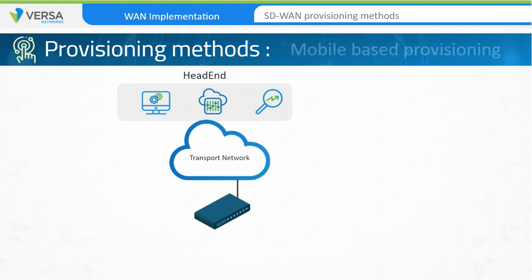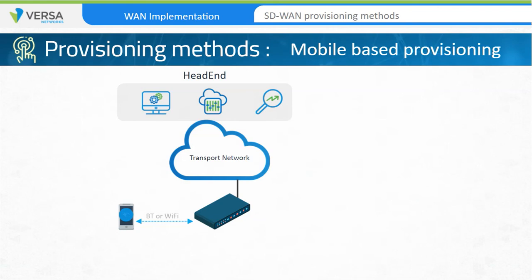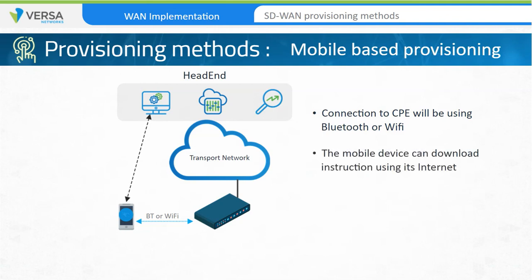With mobile app-based zero-touch provisioning, a customer can use a mobile application to start the bootstrapping process. A mobile device, such as a phone or tablet, can connect to the CPE device over Bluetooth or Wi-Fi using a mobile application. The device can leverage the mobile device's internet connection to talk to the orchestrator, which can then bootstrap the device. In various implementations, the mobile application can also leverage URL-based provisioning of the appliance by using Wi-Fi to talk to the appliance and the WAN links for provisioning.